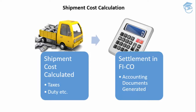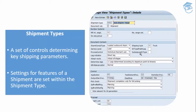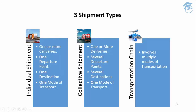When we're using transportation planning in logistics execution, the shipment type plays a very critical role. The shipment type represents a set of controls and settings that determine key shipping parameters. For example, the shipment type can affect the mode of transport to be used, the direction — whether the delivery is inbound or outbound — and various copy control parameters, such as what to copy from the outbound delivery into the shipment document.